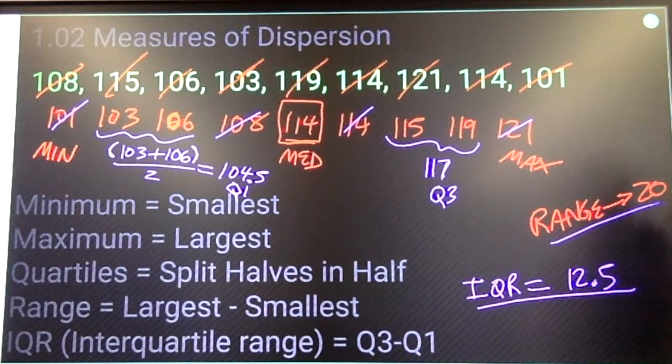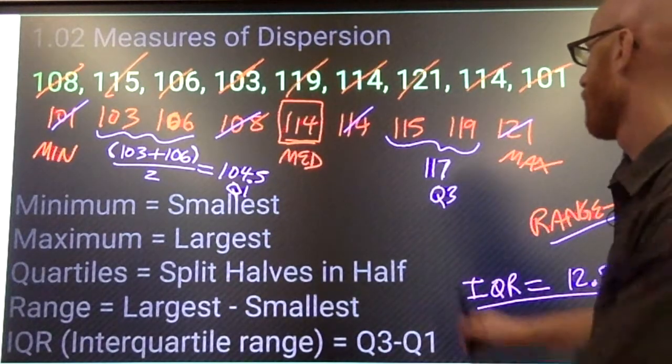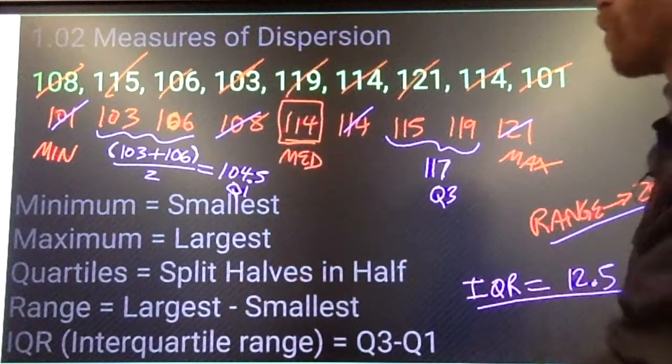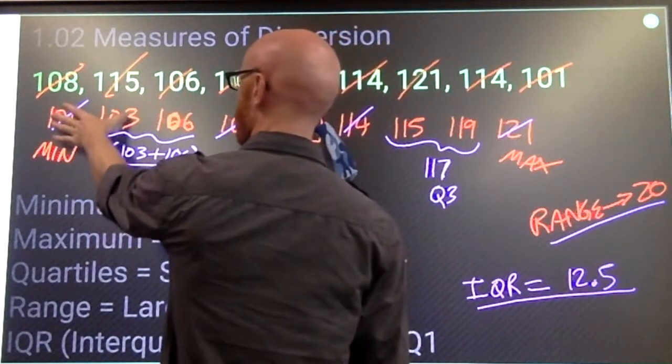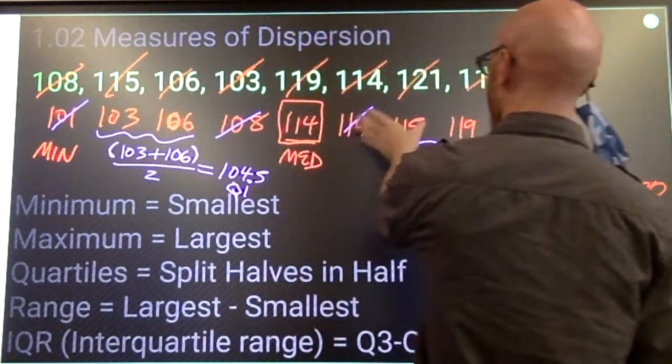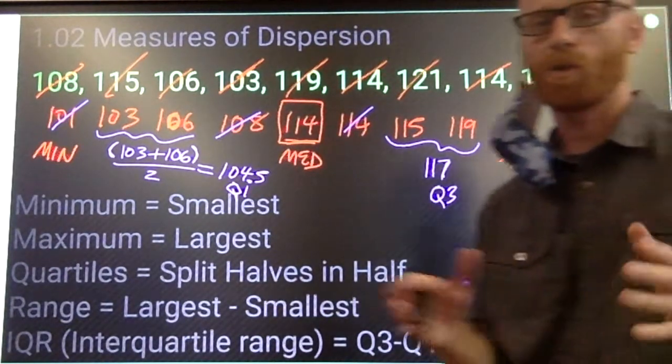Ranges tell you distances over which things are spread. Quartiles split your data into quarters along with the median. So, a quarter of the data, right, two pieces here, quartile, two pieces, median, two pieces, quartile, two pieces. Splits it into equal sized quarters.